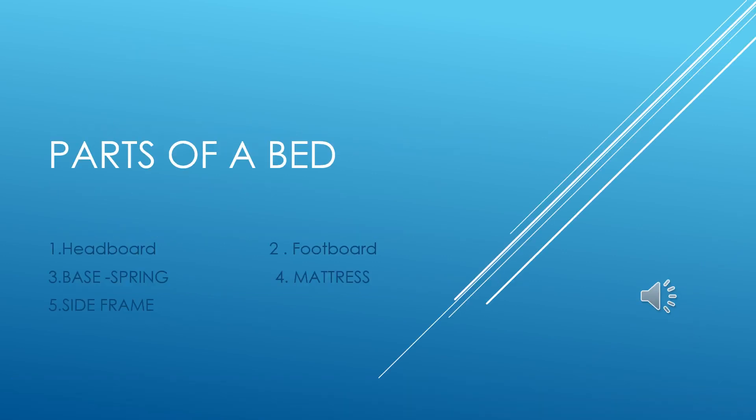Let us know the various parts of a bed. So basically, we have five parts in a bed. Those are: number one, headboard; number two, footboard; number three, base spring; number four, mattress; and number five, side frame.